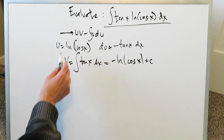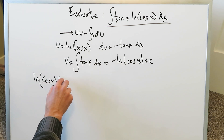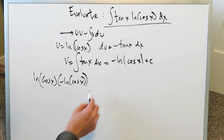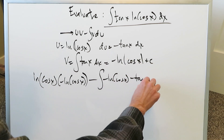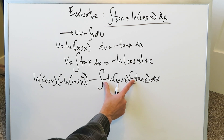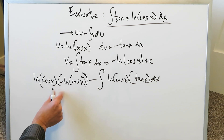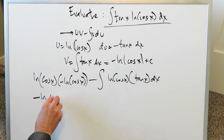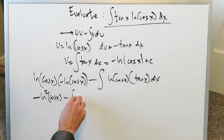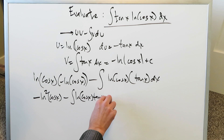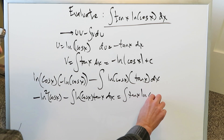Now look at this and plug everything in as needed. u equals natural log of cosine(x); v equals minus natural log of cosine(x). Then you have the minus sign and the integral of v times du: minus natural log of cosine(x) times minus tan(x) dx. Taking care of the signs — this minus and this minus cancel to become positive — leaving only the negative out front. You can combine everything: minus natural log of cosine(x), all squared. And the remaining integral of natural log of cosine(x) times tan(x) dx is exactly the original integral.